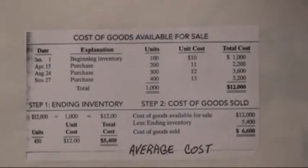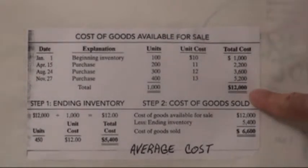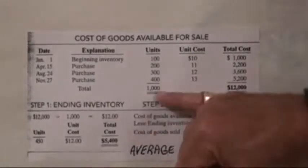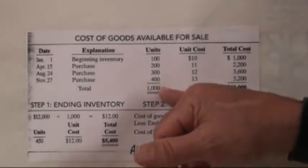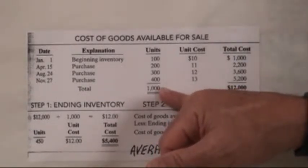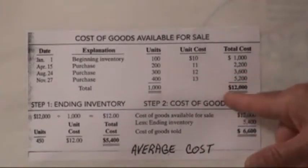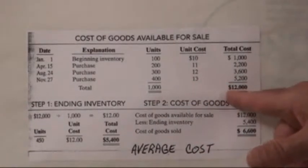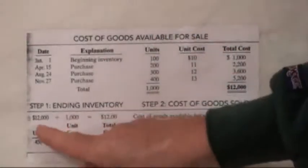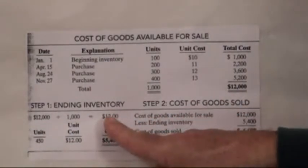Whether you're doing LIFO, FIFO, or average cost, you always have to extend everything out to get your total cost, because this is your total goods available for sale. You also get your total units. We know that if we sold 550 units, we can subtract that from what was available, leaving 450 ending units. The total cost for the 1,000 units was $12,000. Dividing $12,000 by 1,000 units gives us $12 per unit.